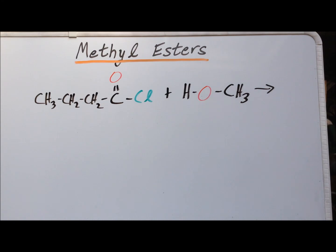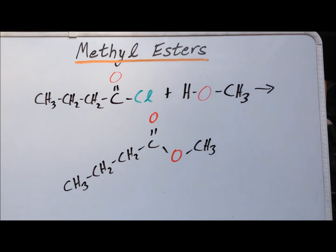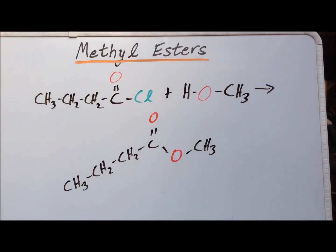For our fourth and final reaction, we have butyryl chloride reacting with methanol. Please predict the major organic product's structure and name. The major organic product, shown here, is methyl butyrate. Please see the following computed structures for reactants, products, and transition states.